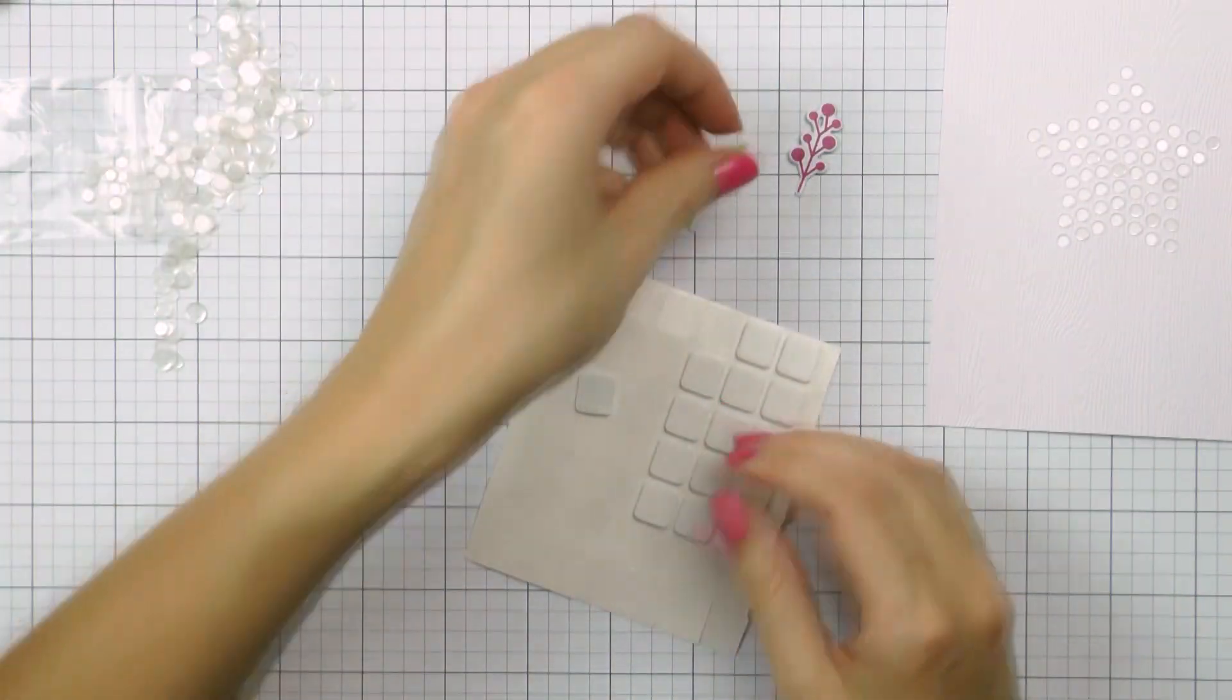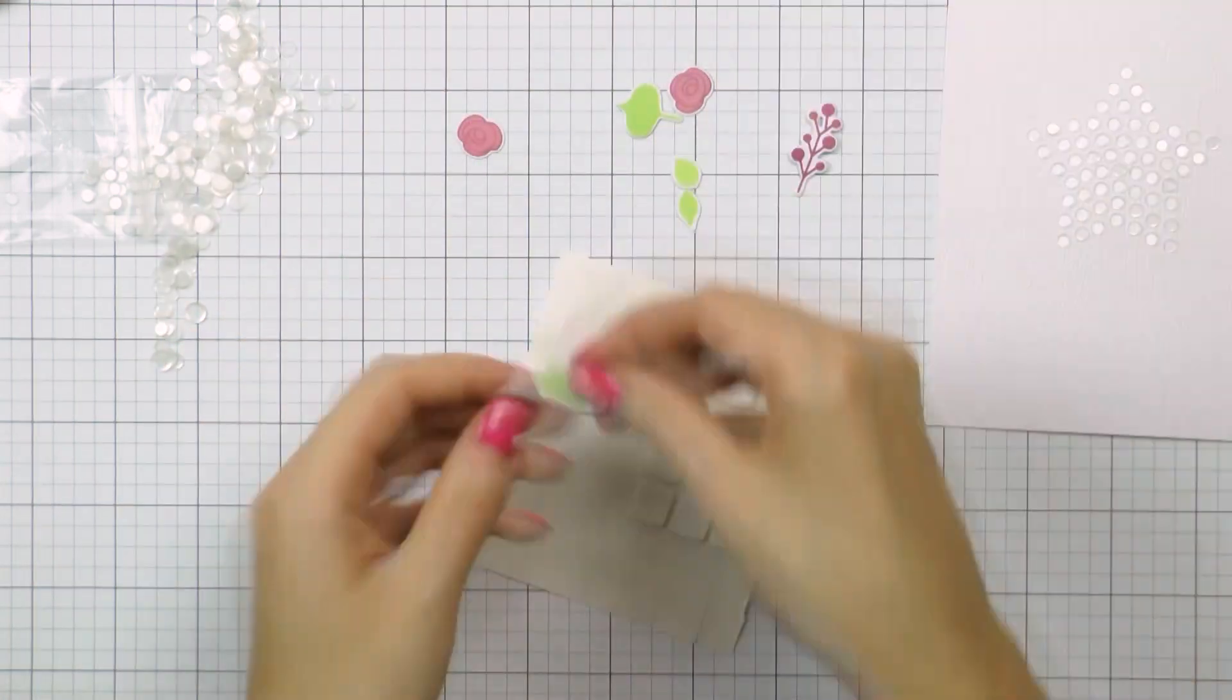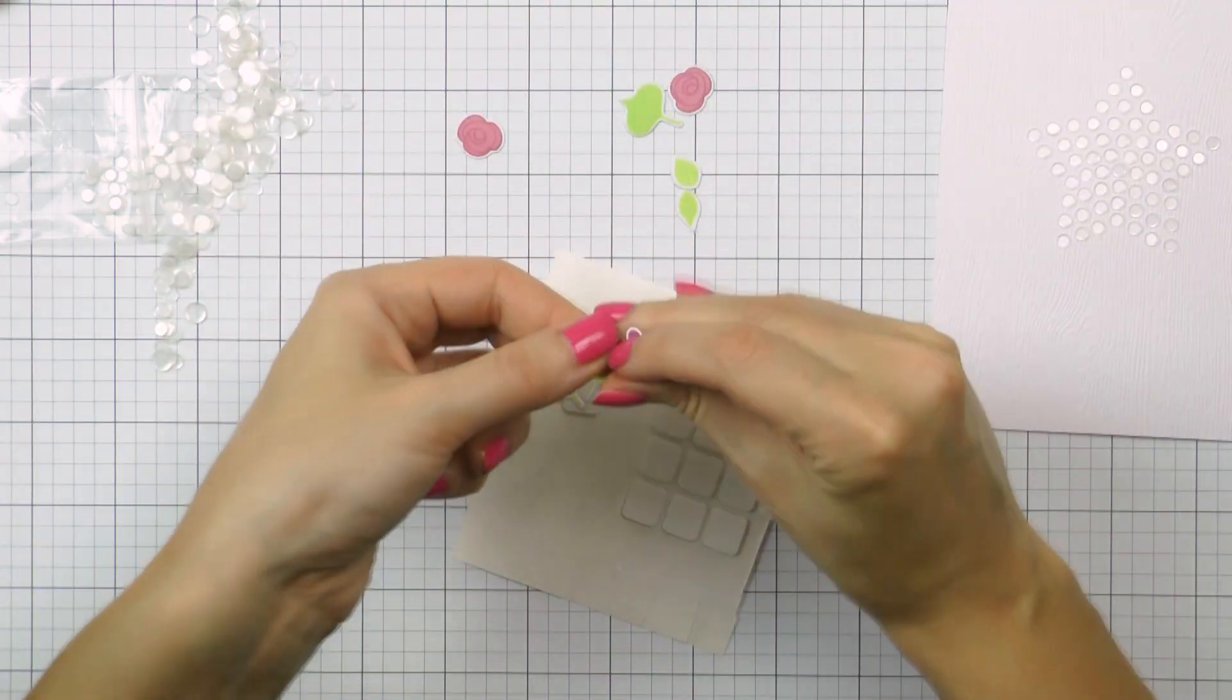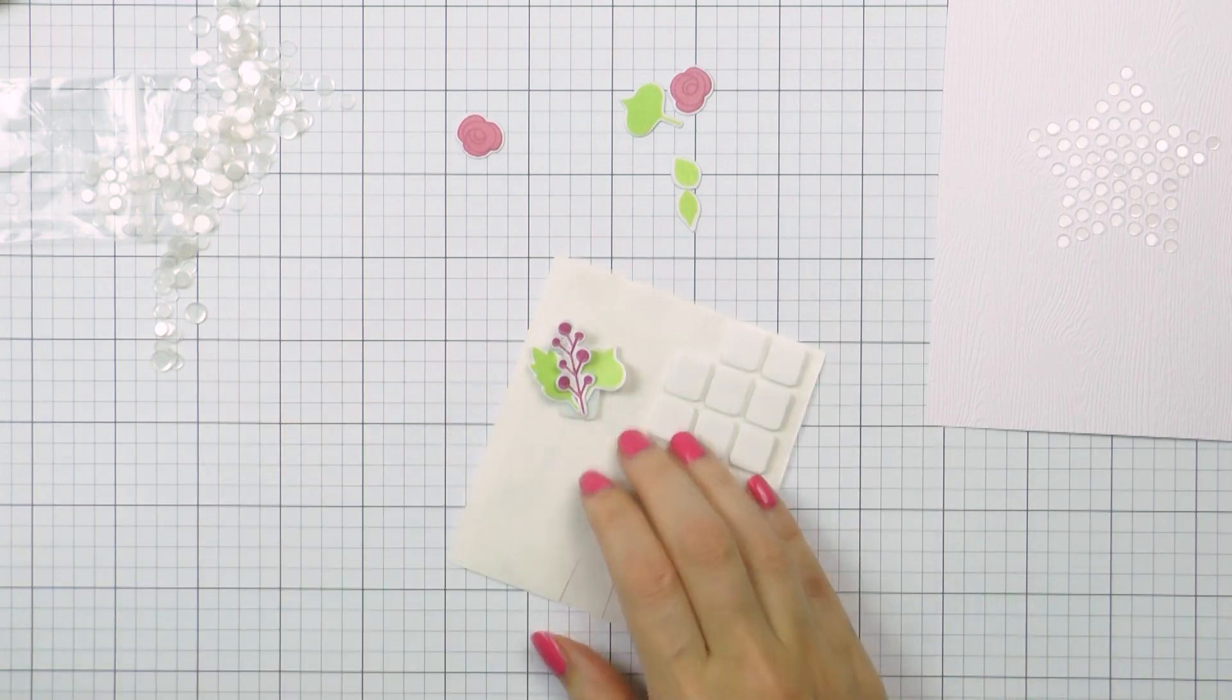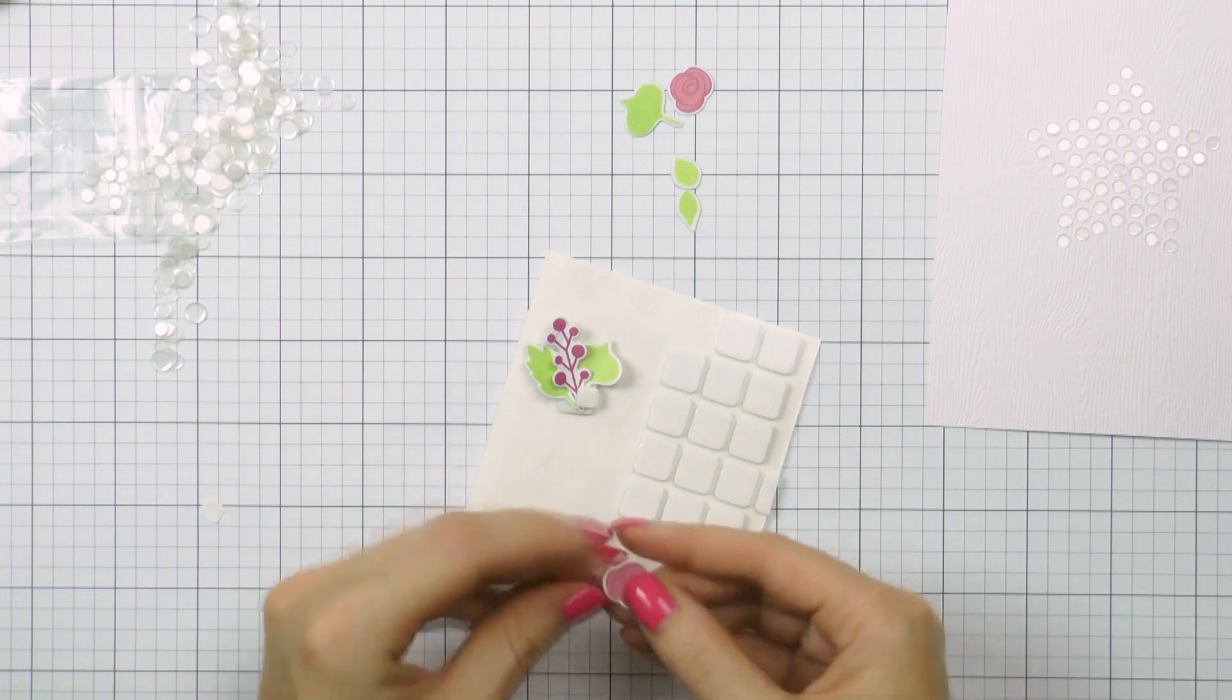To finish my card I have already stamped and cut out several tiny flowers and leaves using two stamp sets from Pretty Pink Posh. I used the Autumn Blooms and Bold Blooms sets for this. I am going to create a little floral cluster and the way I like to do this is I make it or I create the cluster on a large foam square.